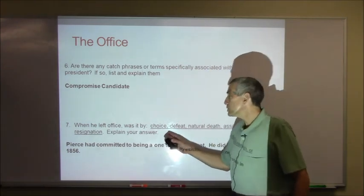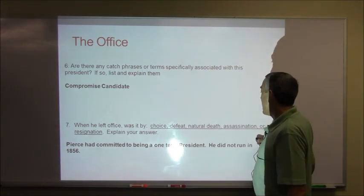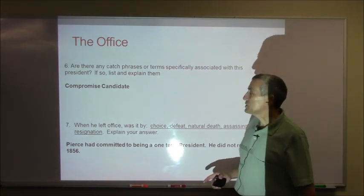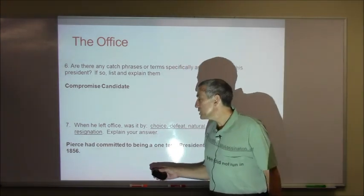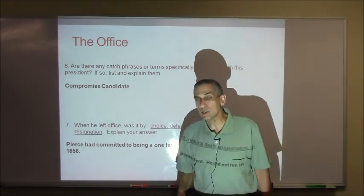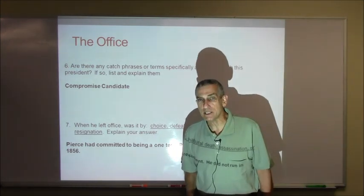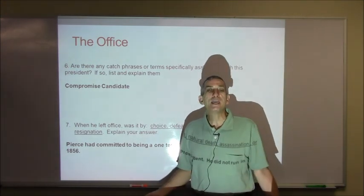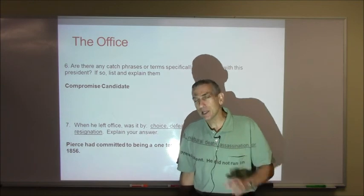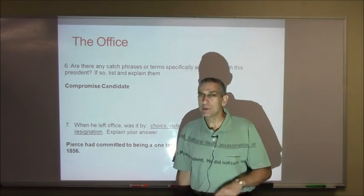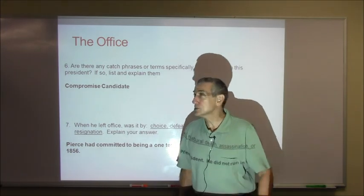When he left office, was it by choice, defeat, natural death, assassination, or resignation? Pierce had committed to being a one-term President, so he did not run in 1856. He knew he'd been a compromised choice and he said, okay, I'll take the job, but I'm not going to do it twice.